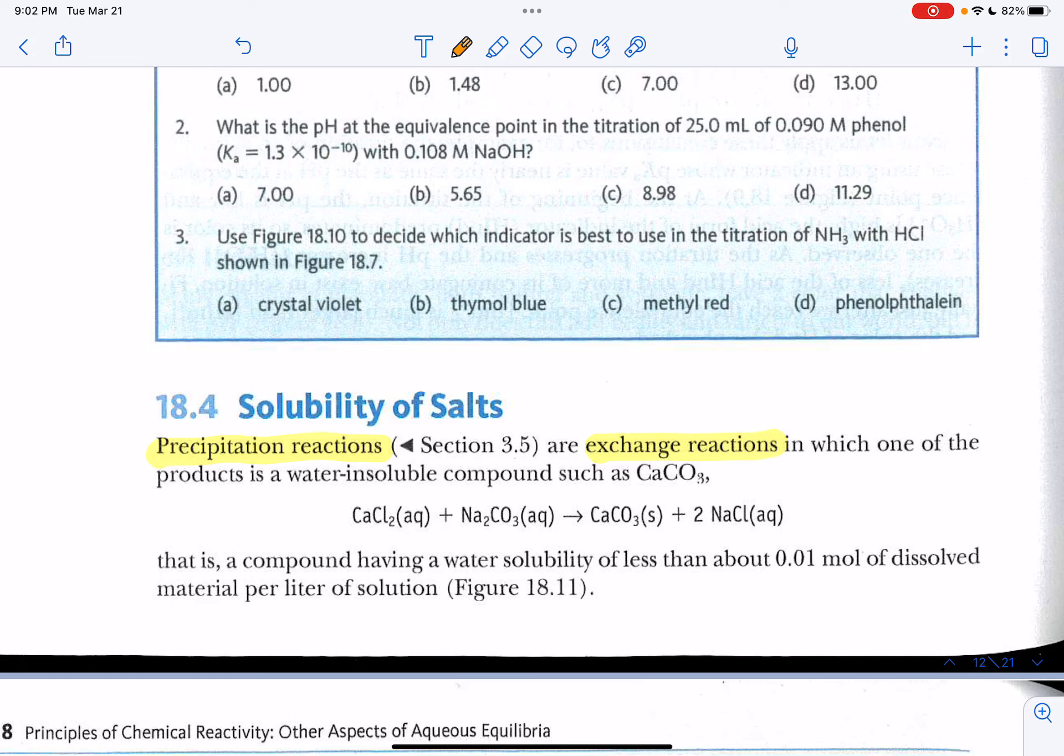In this screencast, we will talk about the solubility of weakly soluble salts. You might recall that we've talked about Ka for weak acids, Kb for weak bases, and Ksp for weakly soluble salts. Ka for acids, Kb for bases, Ksp for soluble salts, weakly soluble.